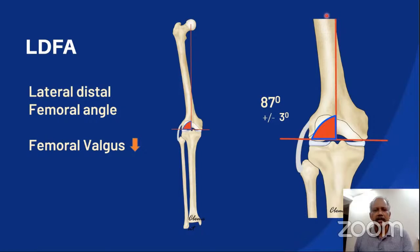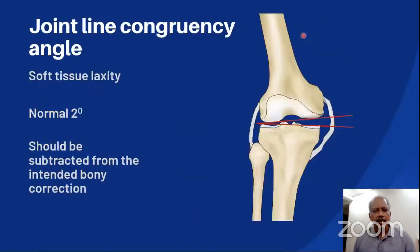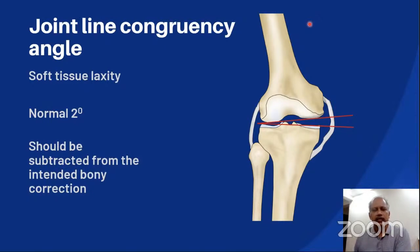The lateral distal femoral angle (LDFA) is formed by the mechanical axis of the femur and the femoral joint line on the lateral aspect. The normal value is also 87 degrees plus or minus 3. It is decreased in valgus due to femoral causes, most notably a hypoplastic lateral femoral condyle. Coronal plane deformities can also occur due to soft tissue laxity, measured as joint line congruency angle (JLCA) between the articular surfaces of femur and tibia. Normal JLCA is around 2 degrees; anything more indicates soft tissue laxity.